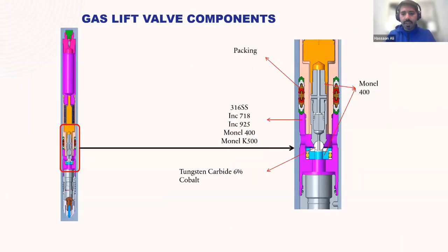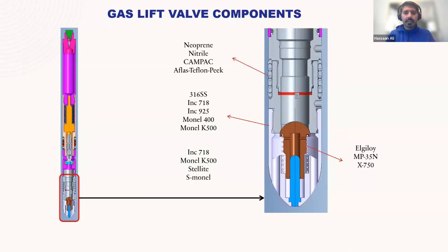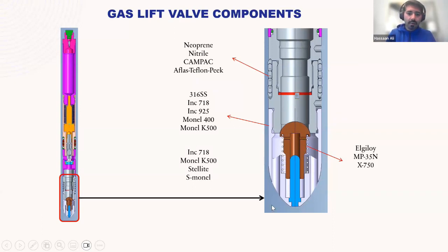This is an enlarged view of the stem, ball, and seat assembly. The seat is installed in the body of the gas lift valve, with injection ports visible. The stem, bellows, and packings ensure no unwanted communication within the gas lift valve. The ball is made of tungsten carbide because it undergoes many open and close cycles. The back check is a simple check valve with a slight dome at the top — when gas hits it, it compresses a spring and pushes the check into a cavity, allowing flow into the reservoir.